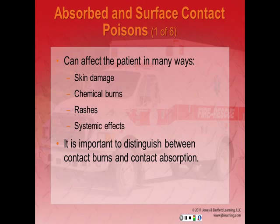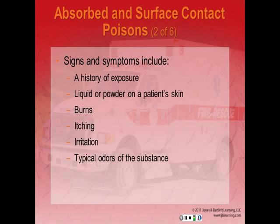Absorbed and surface contact poisons can affect the patient in many different ways — skin damage, chemical burns, rashes or lesions, and systemic body effects. It is important to distinguish between contact burns and contact absorption. Signs and symptoms of absorbed poisonings include a history of exposure, liquid or powder on the patient's skin, burns, itching, irritation, and typical odors of the substance. Emergency treatment for contact poisoning involves the following steps.